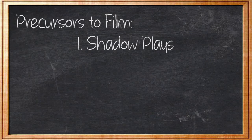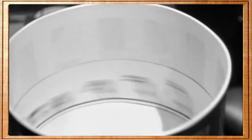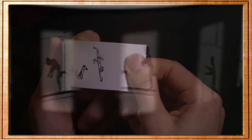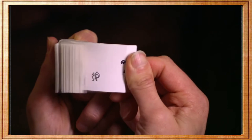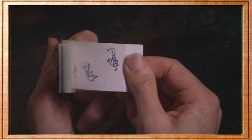Skip forward a few hundred years to 180 AD and we have the zoetrope, a big cylinder with sequential pictures along the inside. When the cylinder is spun, you can look through the holes and the picture appears to be moving. A much easier way of doing this would be a flipbook, but ancient humans seem to have a knack for making everything way more complicated than it needs to be.